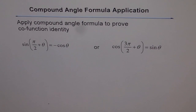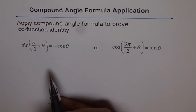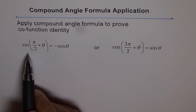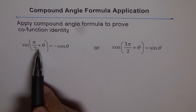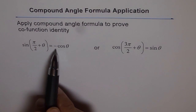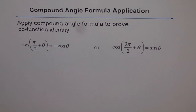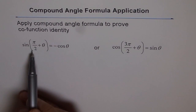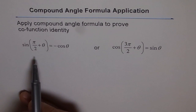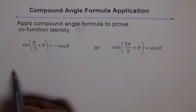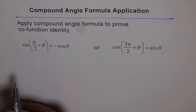Application of compound angle formula. Here we will try to prove the co-function identity, that is sine of π/2 plus θ equals minus cos θ. Remember sine θ and cos θ are co-function identities, and whenever you do π/2 plus or minus θ, or 3π/2 plus or minus θ, sine changes to cos and cos changes to sine. That is why they are called co-function identities.